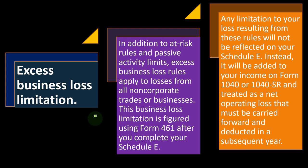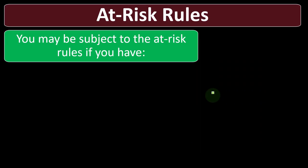Any limitation resulting from these rules will not be reflected on your Schedule E. Instead, it will be added to your income on Form 1040 or 1040-SR and treated as a net operating loss — similar to loss limitation rules for a Schedule C business. If you have excess losses you can't write off against other income, you can hopefully carry them forward to a subsequent period where you can get a benefit from them.